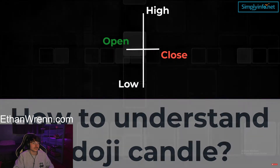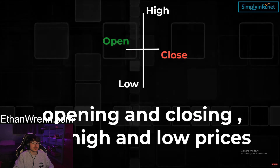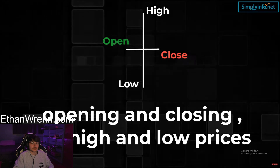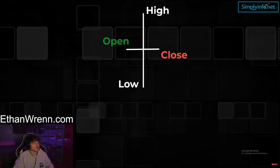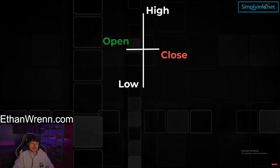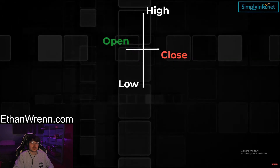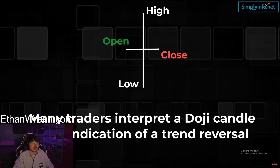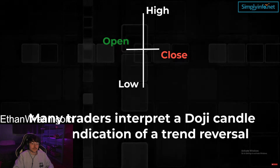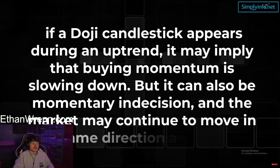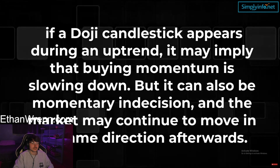Each candlestick has four parts: opening price, closing price, high, and low. The opening and closing prices create a thick section called the body — the greater the difference, the longer the real body. The highest and lowest prices create shadows or wicks. Many traders interpret a doji candle as an indication of a trend reversal, choosing to pause and reflect for a more convincing pattern. If a doji candlestick appears during an uptrend, it may imply that buying momentum is slowing down, but it can also be momentary indecision and the market may continue in the same direction.